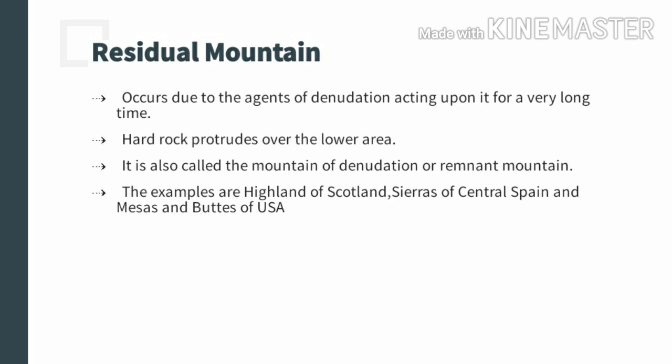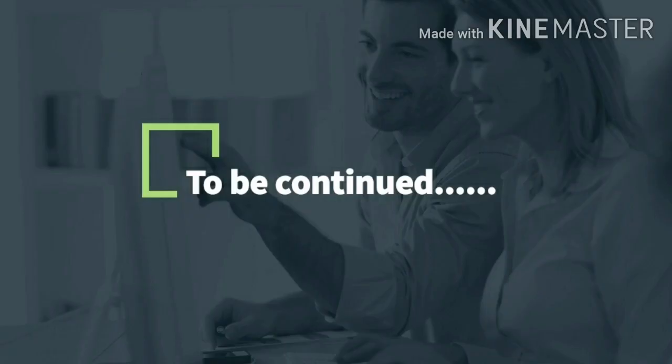The residual mountain term is usually applied to mountains associated with dissected plateaus. Examples of residual mountains include the Highlands of Scotland, the Sierra Nevada of central Spain, and the Mesas and Buttes of the USA. This is all for this presentation. We will deal with plateaus in the upcoming presentation. Take care of yourself. Bye bye.